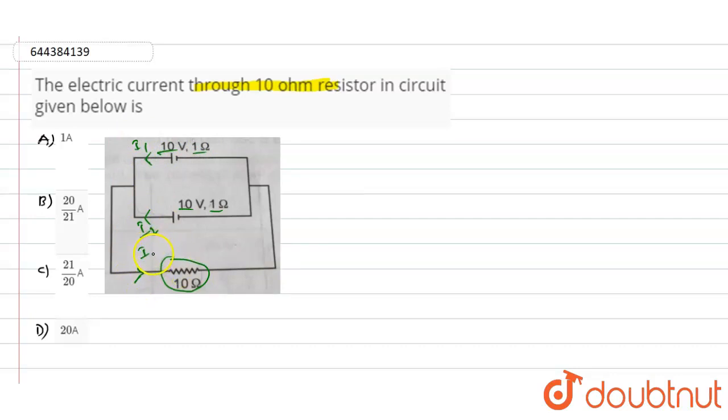So first due to the upper cell or upper branch we will write 10 minus 10 into (i1 plus i2) minus i1, so that will be equals to 0. I have taken an outer loop and written this particular equation, so this is equation number one.